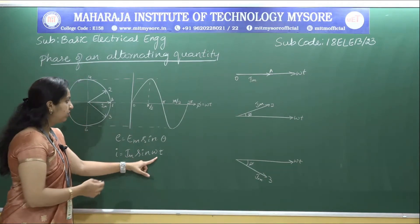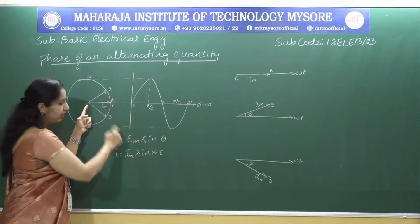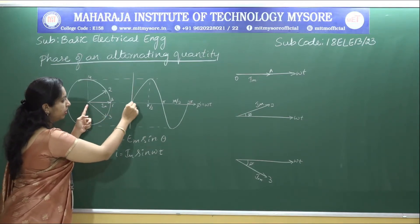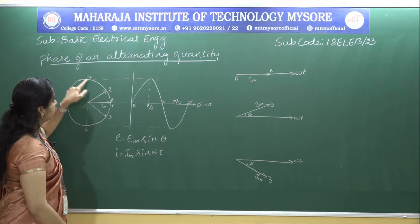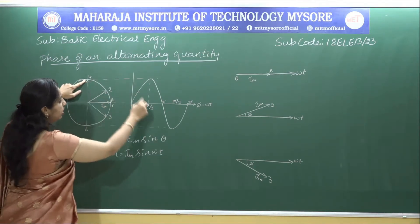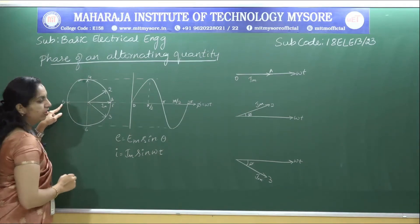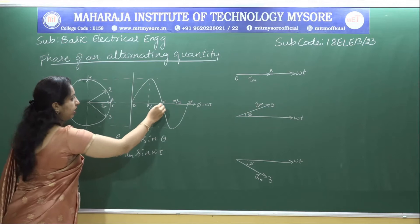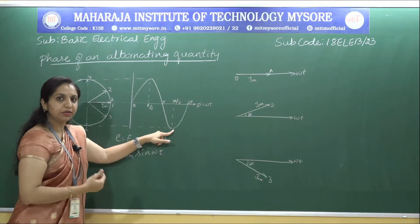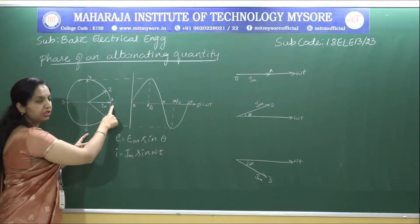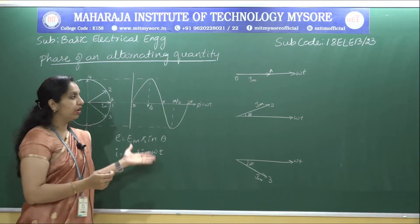Considering θ as 0, the rotating vector is at the reference point, so θ becomes 0 and we get 0. When the rotating vector moves to position 4, θ becomes π/2 and we get the maximum value. When it comes to position 5, θ becomes 180 degrees and we get 0 again. At position 6, that is 3π/2, we get the negative maximum value. Finally when it returns to the same position we get 0. This is how we generate alternating quantities.